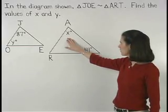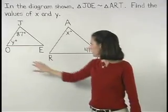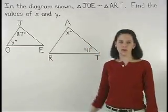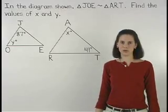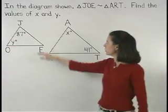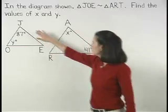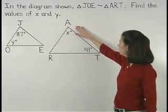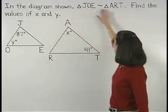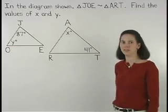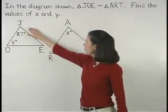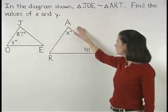To find the value of X, remember that if two triangles are similar, then corresponding angles are congruent. Therefore, since angle J corresponds to angle A, because each letter is mentioned first in our similarity statement, then we know that angle J is congruent to angle A.